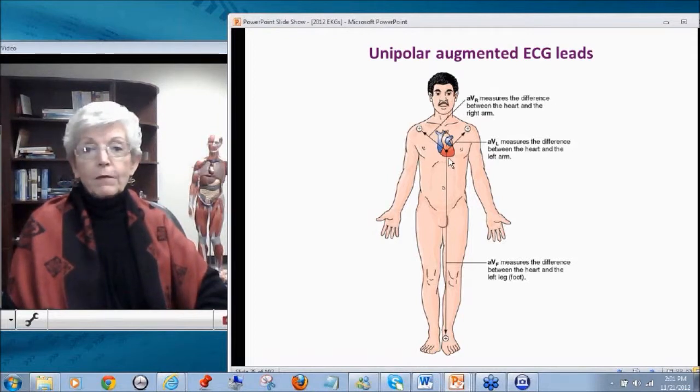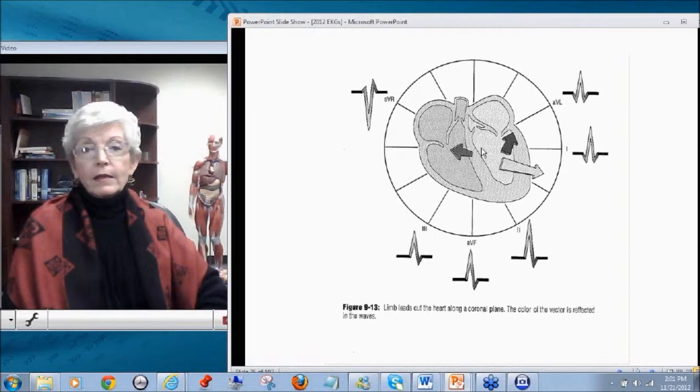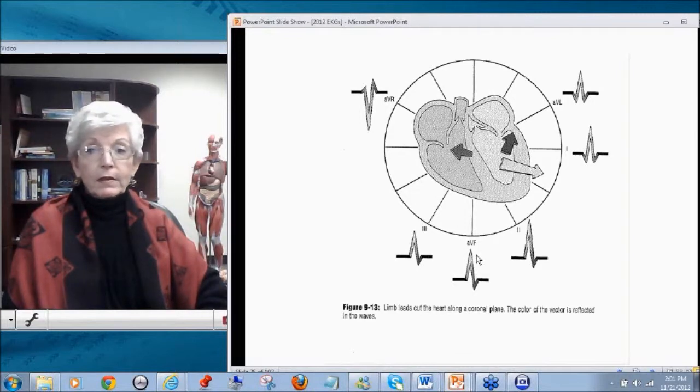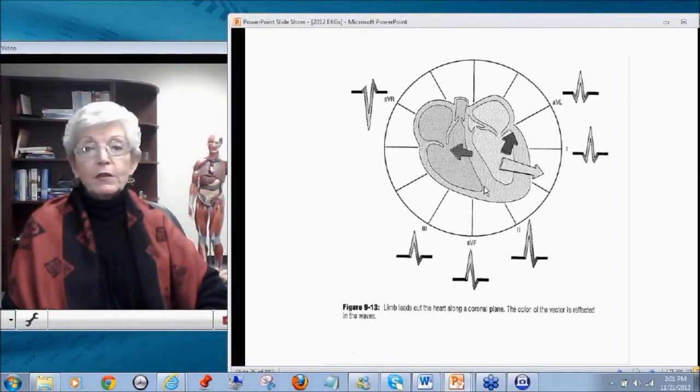Well, if you were to think of that, AVL is very similar to lead 1. It's on the left arm, is it not? So an AVL is a positive. AVF is on the left foot, just as lead 2 is on the left foot, just as lead 3 is on the left foot. So we get a positive deflection.